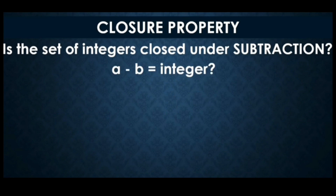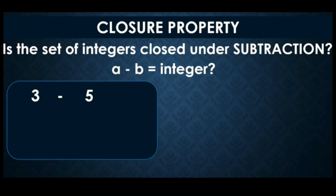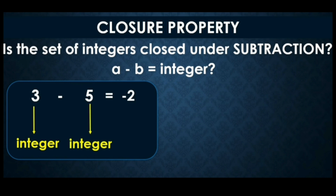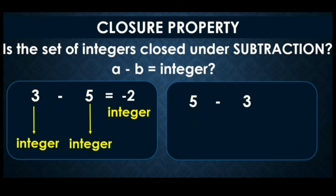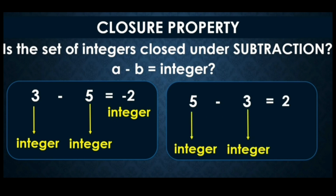Is the set of integers closed under subtraction? The answer is yes — we can apply closure property to subtraction. For example, 3 minus 5: they are all integers, so the result is also an integer. Similarly, 5 minus 3: 5 is an integer, 3 is also an integer, so the resulting answer is also an integer. That is the closure property.